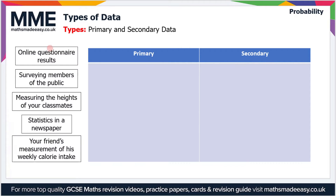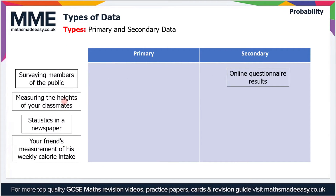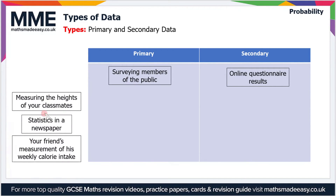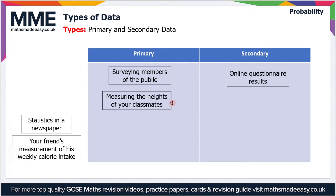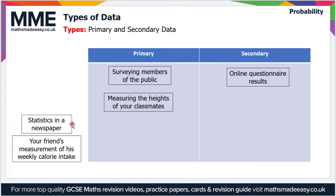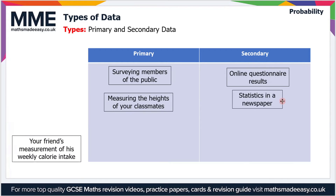Let's go through some examples. Online questionnaire results — you haven't collected this yourself, you found it online, so that's secondary data. Surveying members of the public yourself is primary data. Measuring the heights of your classmates, if you're the one carrying out the measurements and collecting the data, is also primary. Statistics in a newspaper — you're not the one who did the data gathering, so that's secondary data.